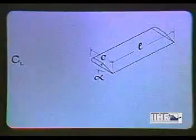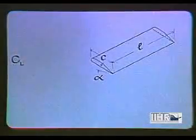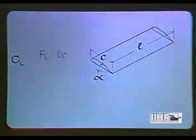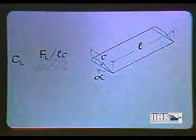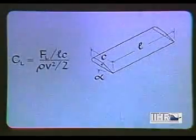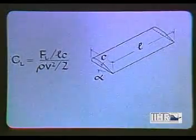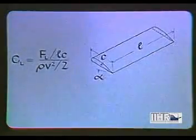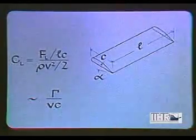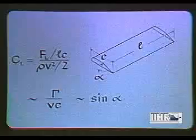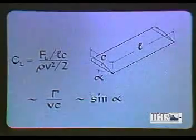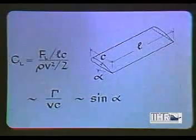A lift coefficient can be written for a vane of length L and chord C as the lifting force per unit vane area in its ratio to the stagnation pressure. According to the circulation theory of lift, this coefficient is proportional to the relative circulation, which in turn is proportional to the sine of the angle of attack of the vane.